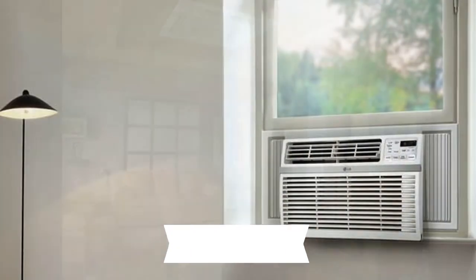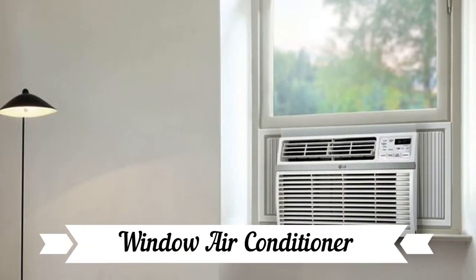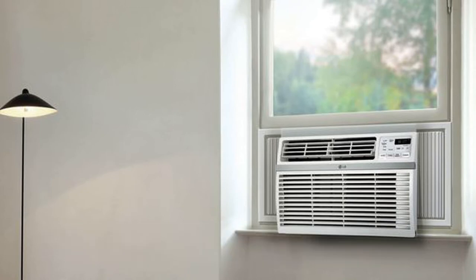Window AC. Window air conditioners are fixed within a cut-out of the external wall or a window which can accommodate such units. These units are more suitable for small rooms where installation of an outdoor unit is difficult. A window unit is the most affordable and reasonably priced in comparison to the other air conditioning systems. These ACs are easy to install, low on maintenance, and ideal for small rooms.